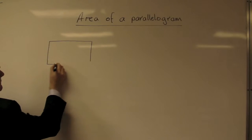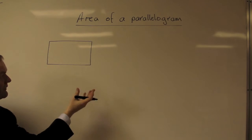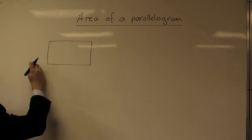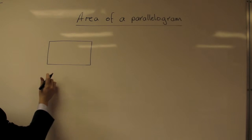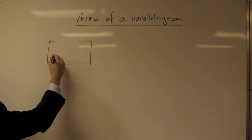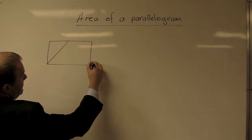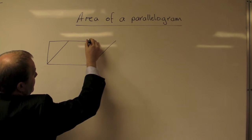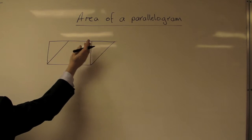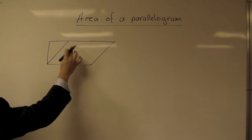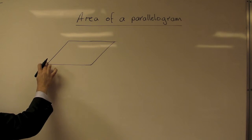So if I start with my rectangle, we know that the area of a rectangle is the base times the height, and that gives us the area. If I now turn the rectangle into a parallelogram, basically push the shape over, I've ended up with a parallelogram.